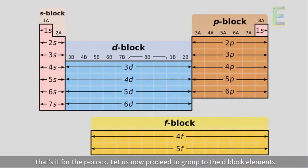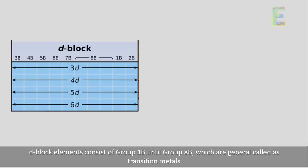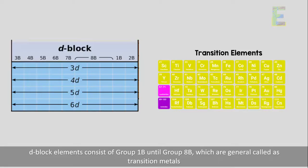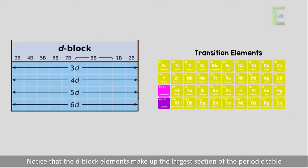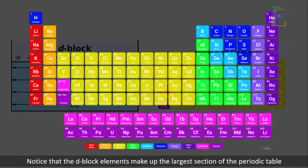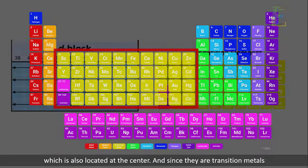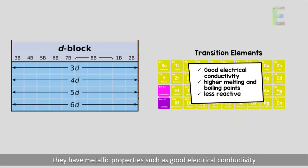Let us now proceed to the D block elements. D block elements consist of Group 1B until Group 8B, which are generally called transition metals. These metals have higher and larger energy levels than the S block and P block elements. Notice that the D block elements make up the largest section of the periodic table, which is also located at the center. Since they are transition metals, they have metallic properties such as good electrical conductivity.